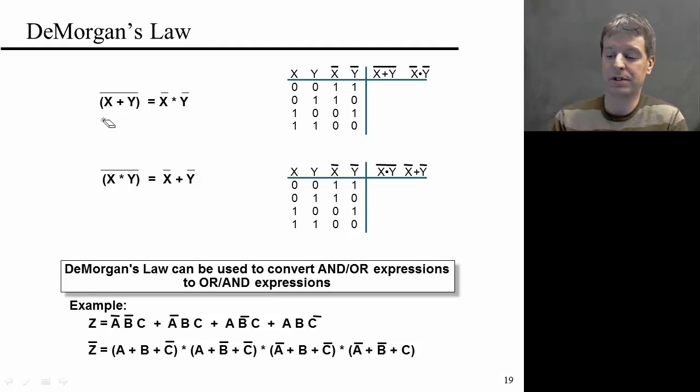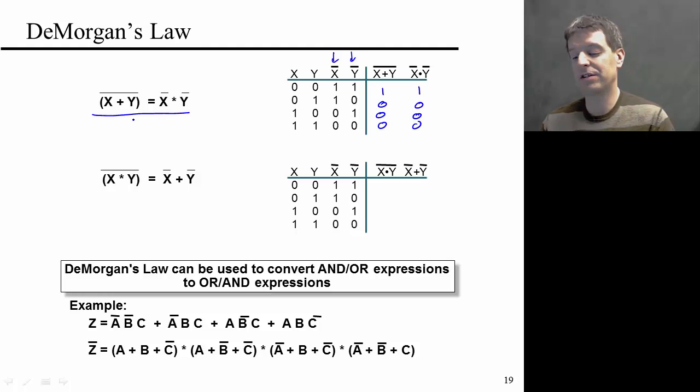First look up here. We're saying that not (X+Y) equals not X and not Y. You can convince yourself that this is actually true just by looking at the truth table. Not (X+Y) is true here and then not in the other three cases. Just by looking, I provided not X and not Y in these columns explicitly, so you can immediately see that not X and not Y is true here and false in the other cases. Essentially what you've done here is you've replaced the OR with an AND and you've replaced the bar over everything with bars over the individual variables.